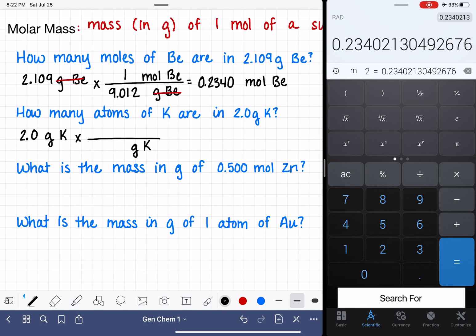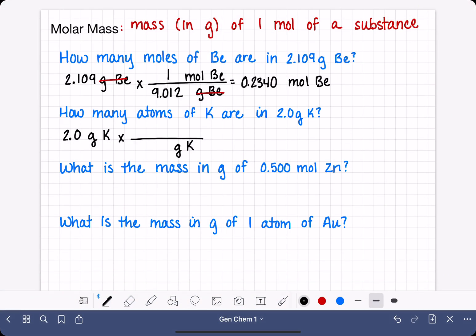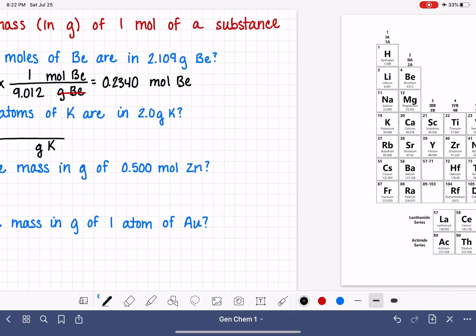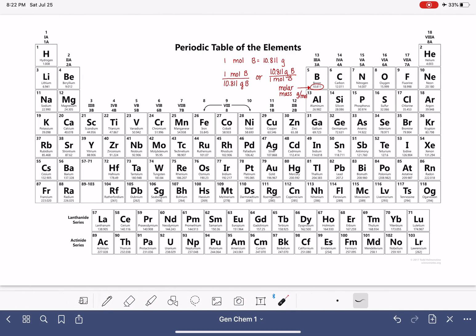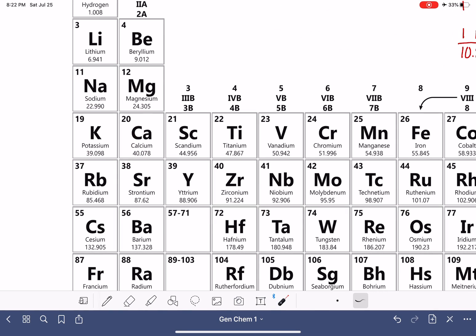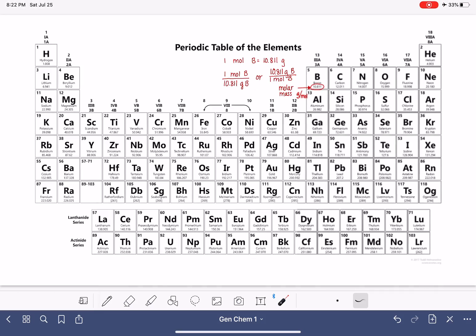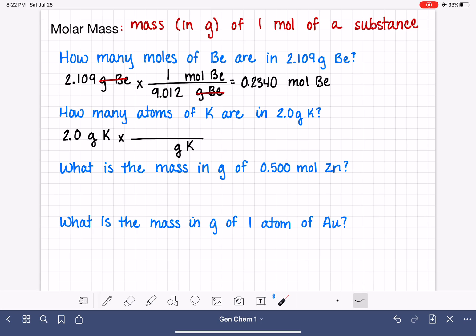Now, when we go to a periodic table, and we look up potassium, let's find it over here, this is the molar mass of potassium, 39.098. That's the mass of a mole of potassium. So 39.098 grams, that's the mass of one mole.